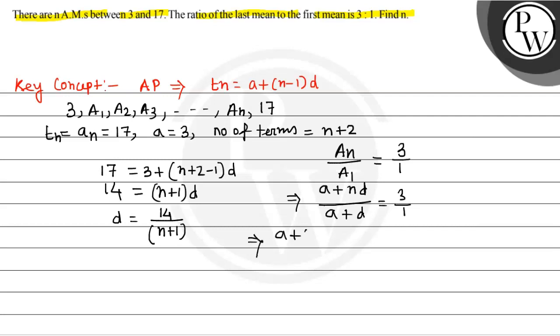Then A plus N times 14 divided by N plus 1, over A plus 14 divided by N plus 1, equals 3 by 1. From the calculation we get 17N plus 3 equals